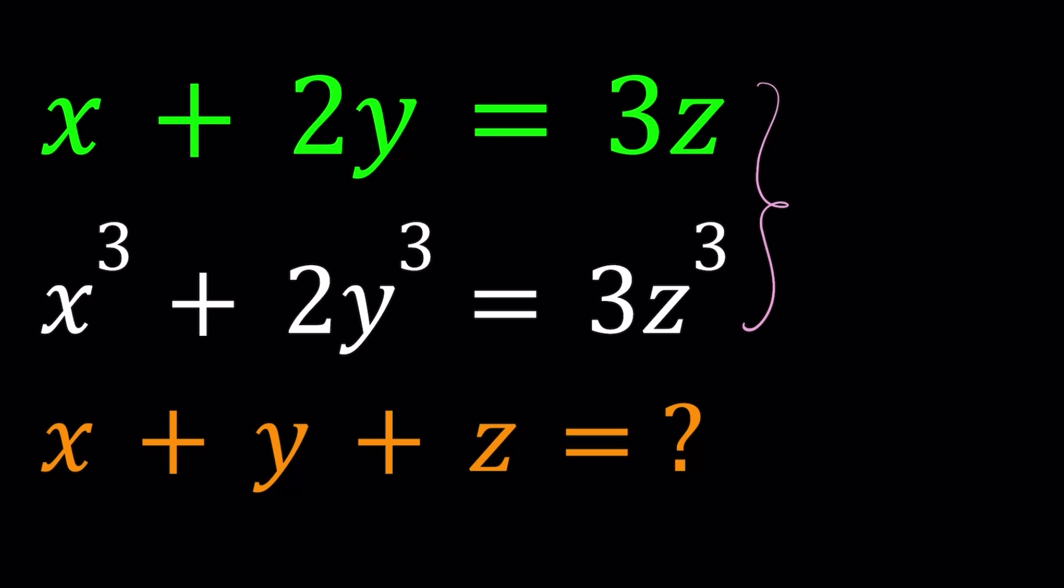We are given this system, and we're supposed to find the sum of x, y, z. So you might be thinking, how am I going to find the sum if I only have two equations but three variables? Is this a Diophantine equation? The answer is no. We're not looking for integer solutions. But guess what? x plus y plus z, we're not asking for x, y, z separately, so maybe we could find it.